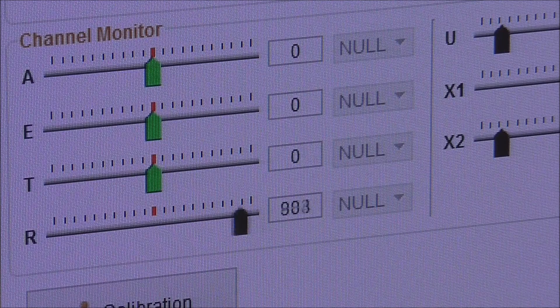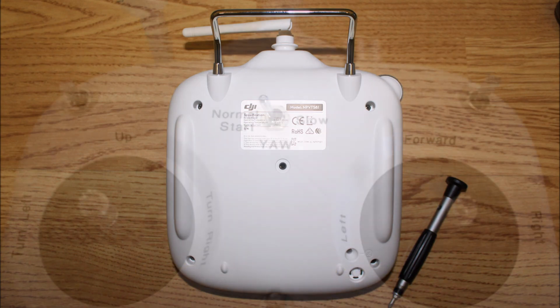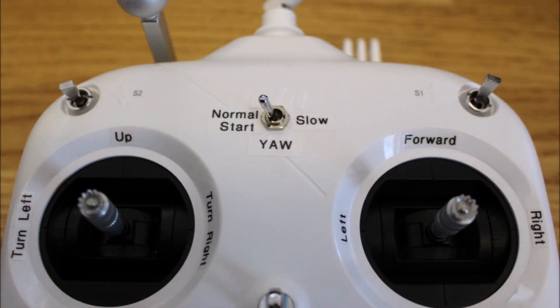When you are happy that everything is working as it should be, put the case back together. Check that you have no trapped wires and reinsert the screws. I used a labelling machine and added some information stickers on the switch for normal start and slow yaw.